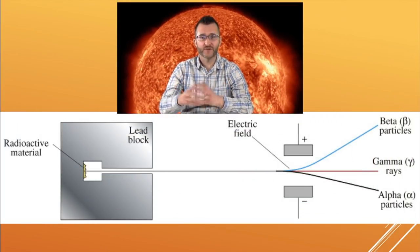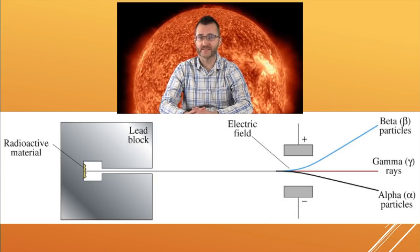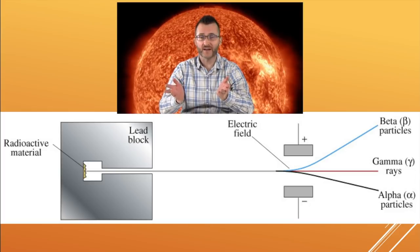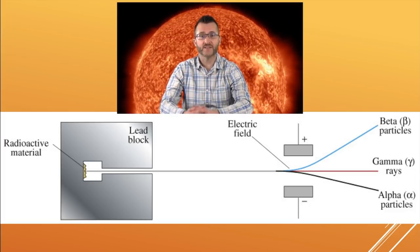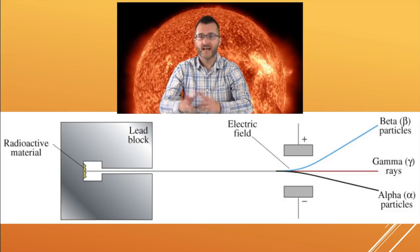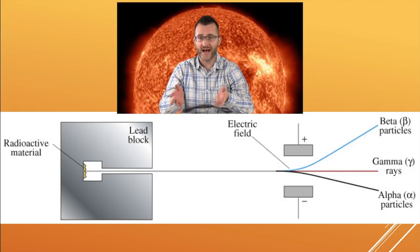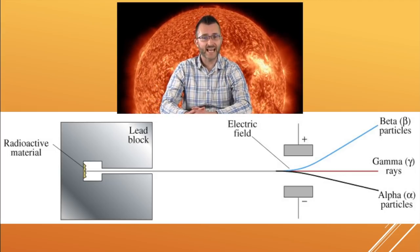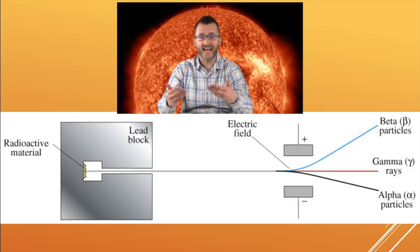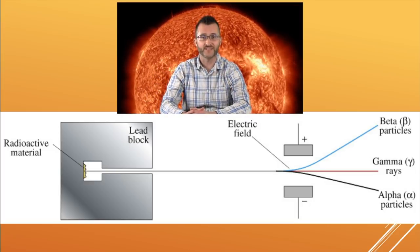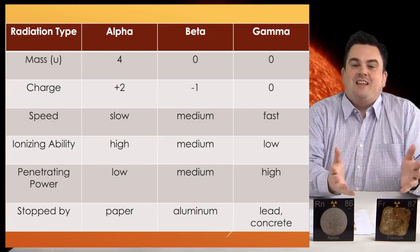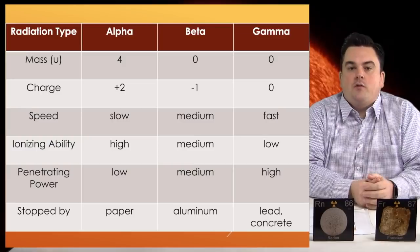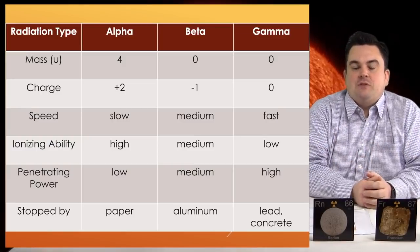This image shows how the different forms of radiation behave in the presence of an electric field. Remember, opposites attract. Beta particles, which are negative, attract to the positive electric field. Alpha particles, which are positive, attract to the negatively charged electric field. Gamma rays have no charge, so they are not affected at all by an electric field. This table is a good summary and study guide for all the different properties of the different types of radiation.